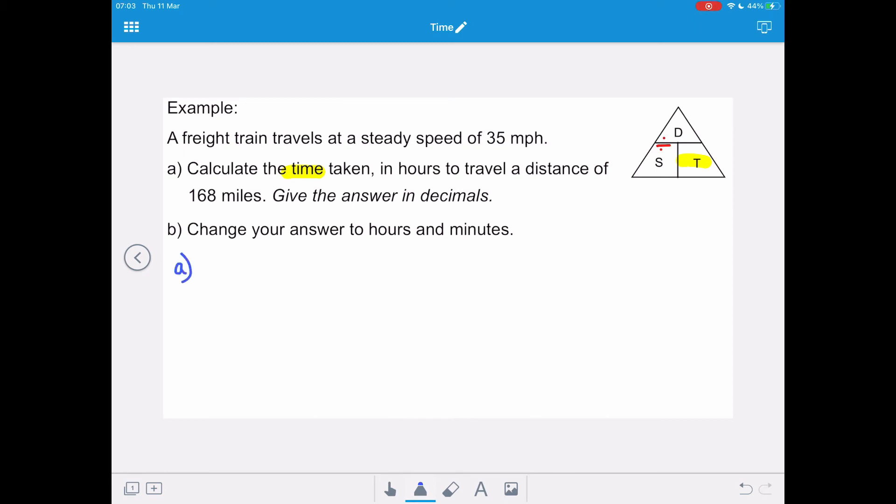So let's look at part a. We're trying to work out the time, that's our unknown. The distance in the question is 168 miles and our speed is 35 miles per hour. We're going to write the formula t equals d over s. We're going to substitute in distance of 168 and speed of 35 and the time in a decimal is 4.8 hours.